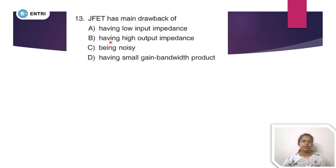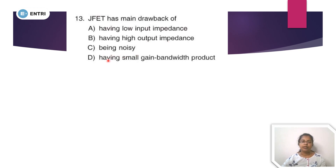Next question, question number 13: JFET has a main drawback. Option A: having low input impedance. Option B: having high output impedance. Option C: being noisy. Option D: having small gain bandwidth product.